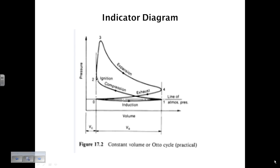The diagram may be seen to consist of two loops. The upper and the larger loop is known as the positive loop, since its area represents the work done by the engine during each cycle.